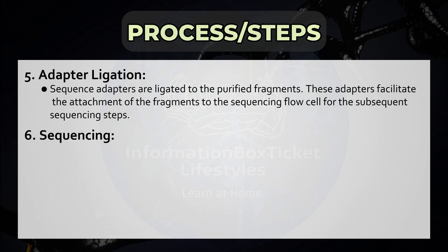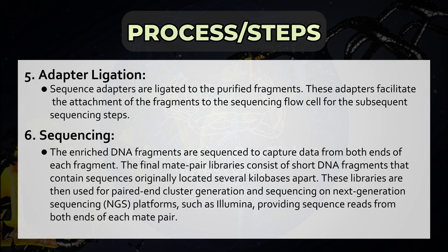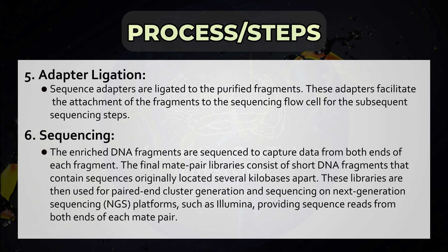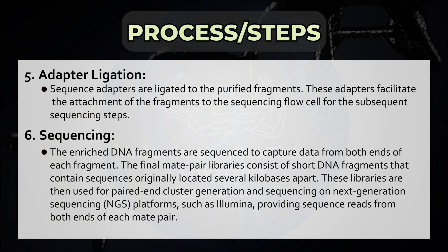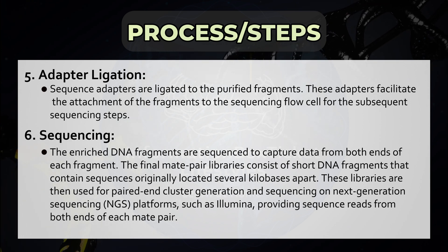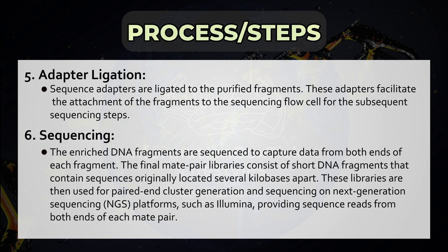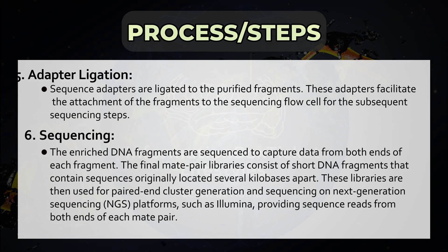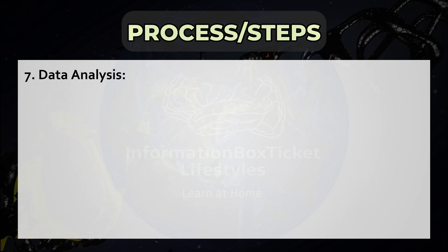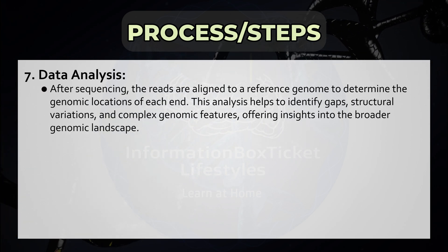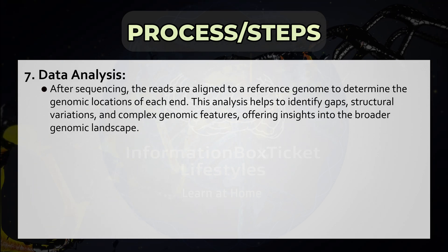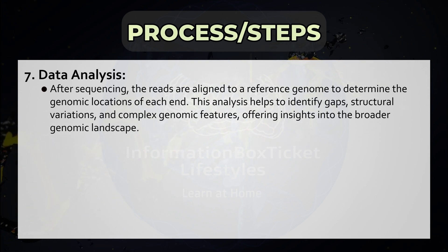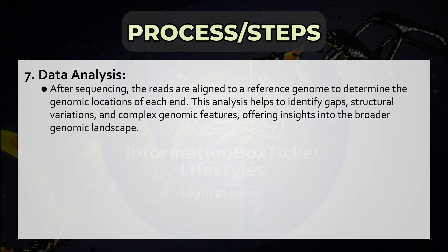Step 6: Sequencing. The enriched DNA fragments are sequenced to capture data from both ends of each fragment. The final mate pair libraries consist of short DNA fragments that contain sequences originally located several kilobases apart. These libraries are then used for paired-end cluster generation and sequencing on next-generation sequencing (NGS) platforms, such as Illumina, providing sequence reads from both ends of each mate pair. Step 7: Data Analysis. After sequencing, the reads are aligned to a reference genome to determine the genomic locations of each end. This analysis helps to identify gaps, structural variations, and complex genomic features, offering insights into the broader genomic landscape.